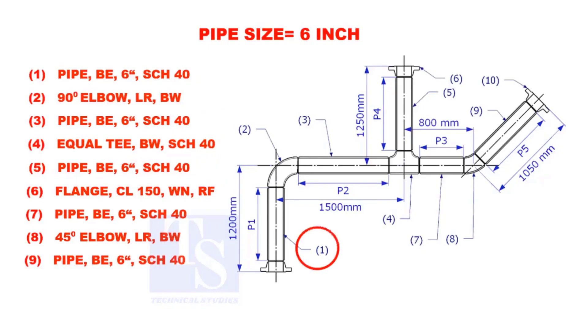Let us calculate the length of pipe 1. To calculate the length of pipe 1, we need to reduce the flange height and the elbow center from the measurement 1200mm.